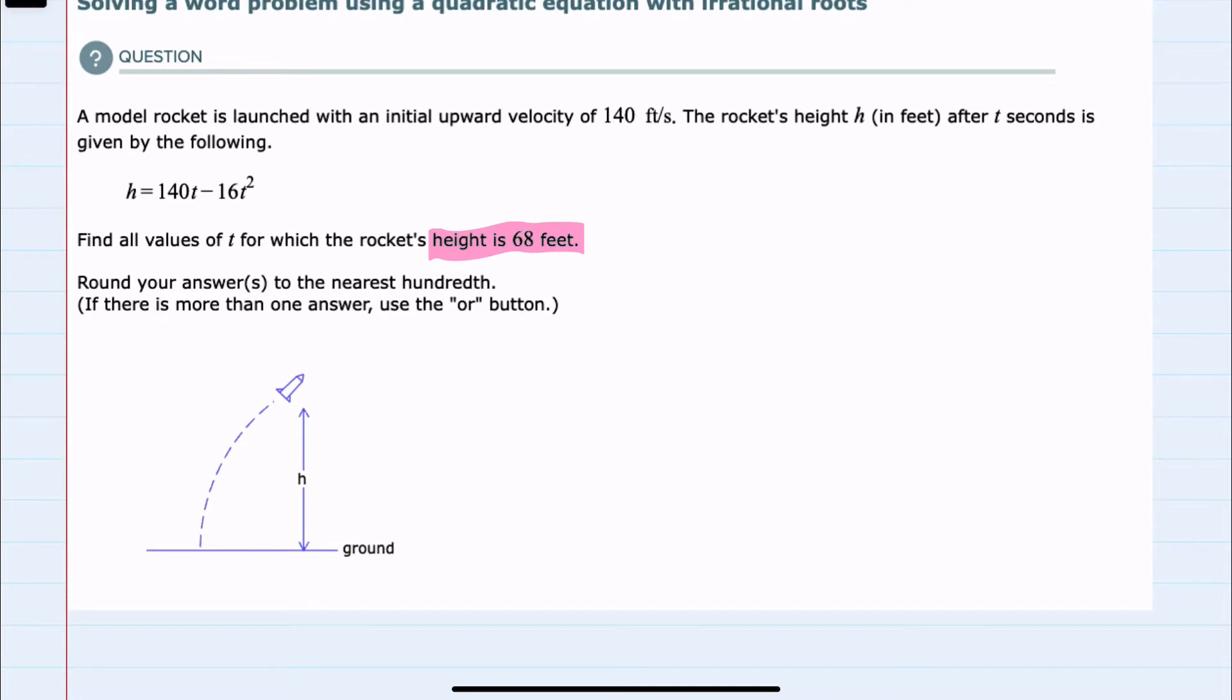So knowing that the height is 68 feet, I can substitute that into the formula that we were given, giving us 68 equals 140t minus 16t squared.